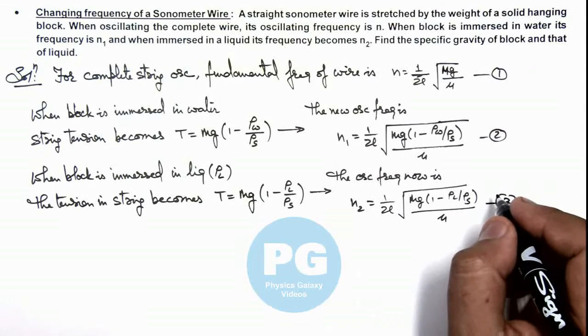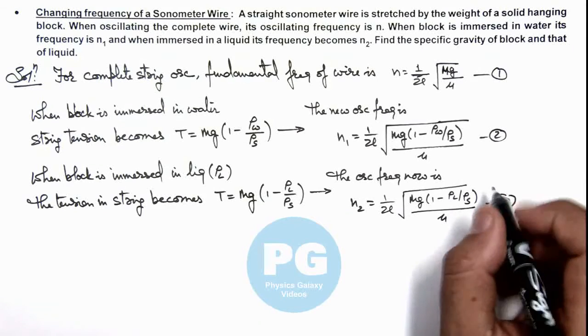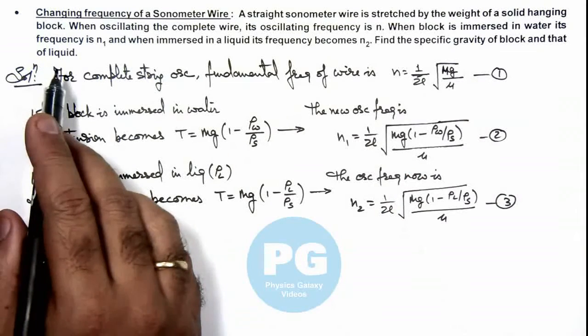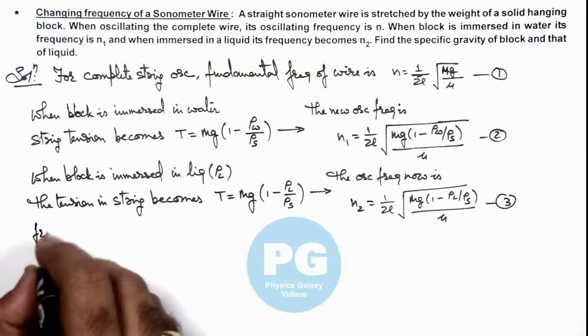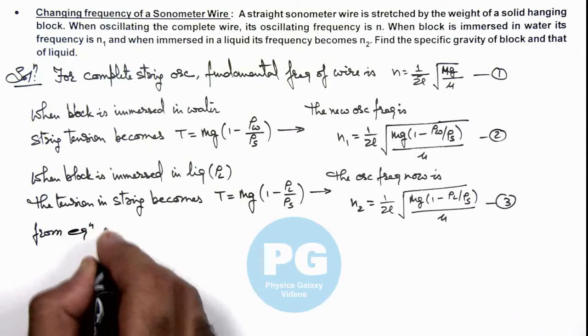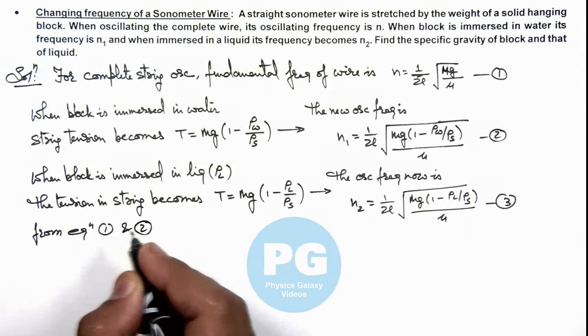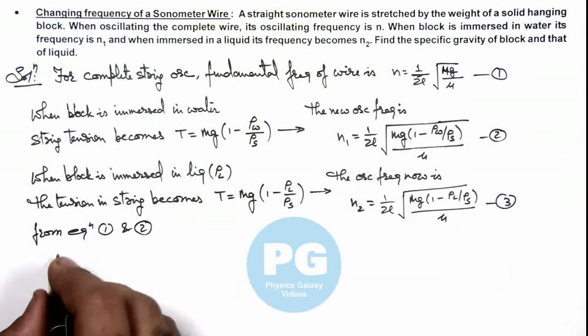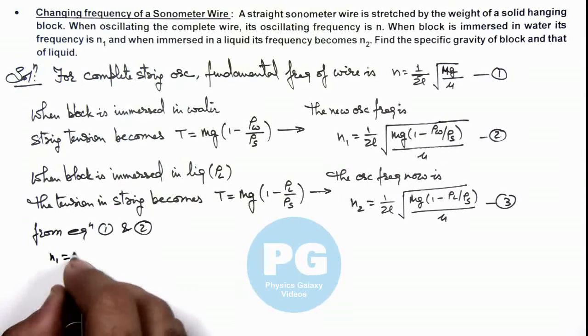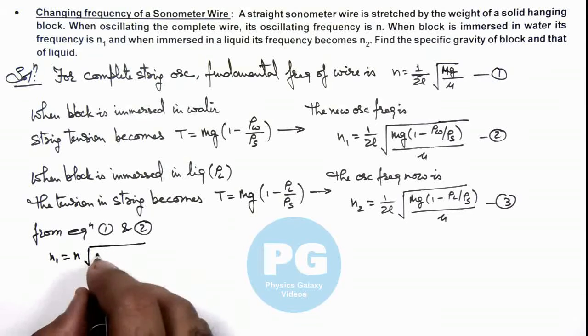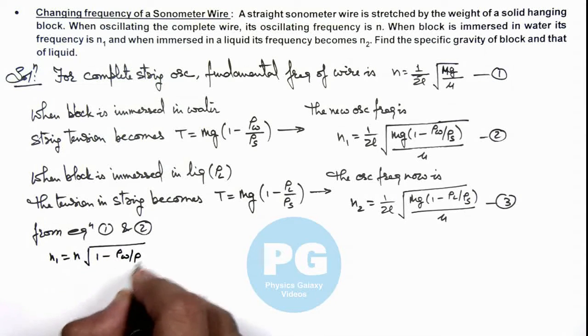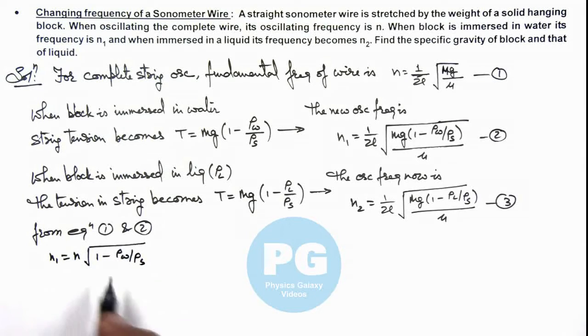From these relations, we can find the specific gravity of the block and liquid. First, from equations 1 and 2, we get n₁ = n√(1 - ρ_water/ρ_solid). Squaring this gives n₁²/n² = 1 - ρ_water/ρ_solid.